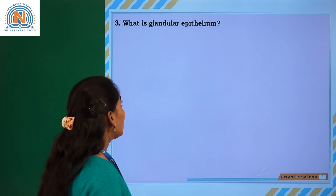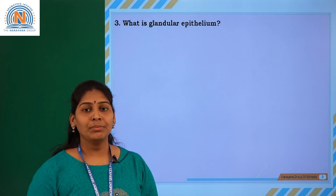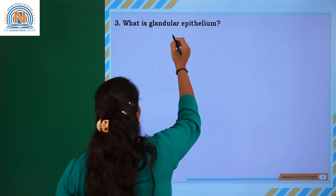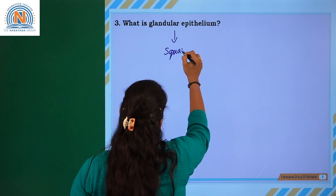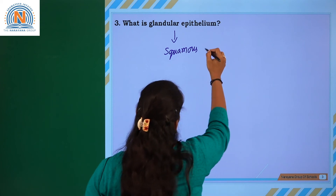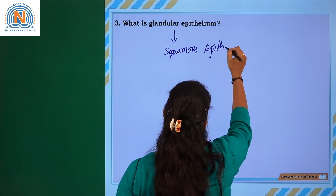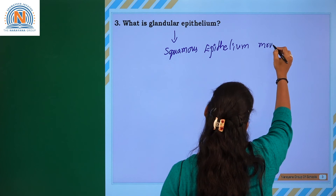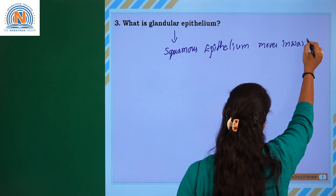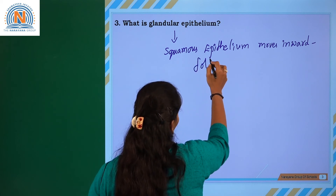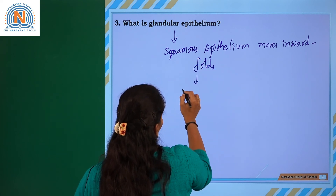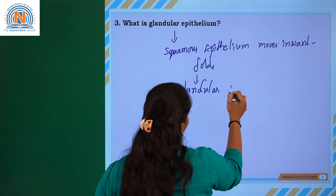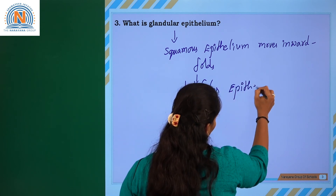The next question is: what is glandular epithelium? Sometimes epithelial tissues grow inward and form glandular epithelium. Glandular epithelium is formed when squamous epithelial tissue moves inward, folds, and forms glands. We can find glandular epithelium in the glands.